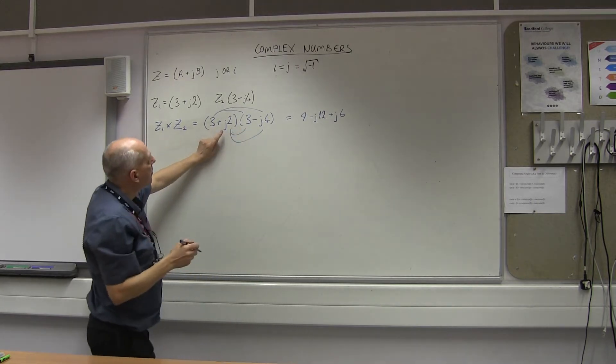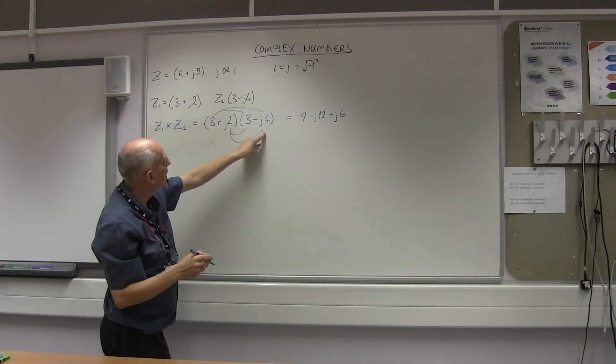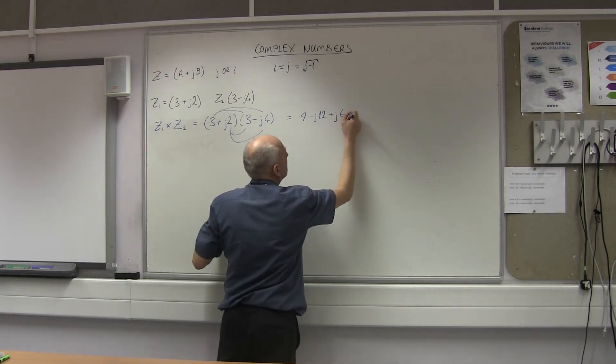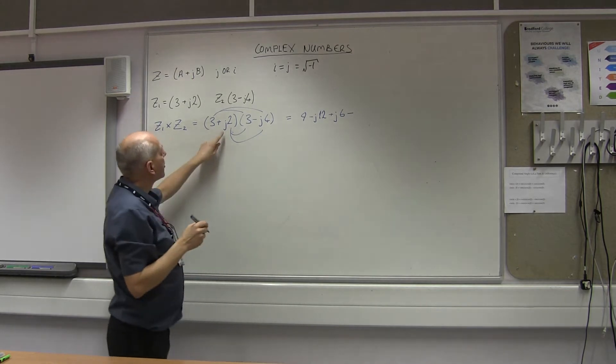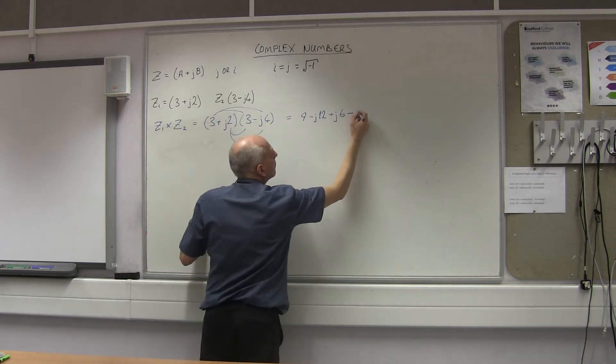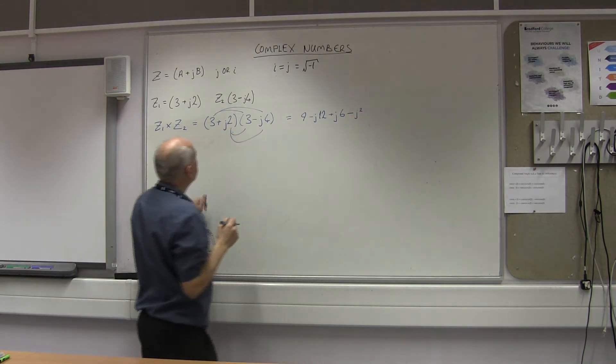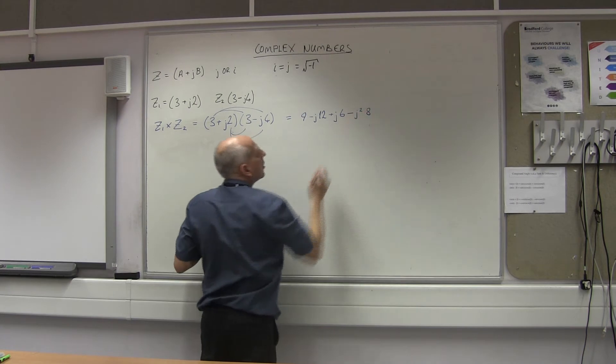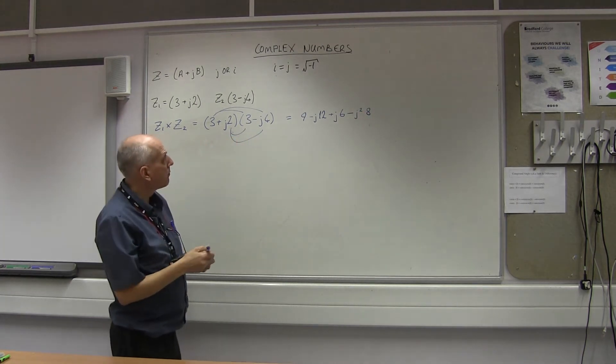And then finally, the more trickier one, J2 times minus J4. So it's going to be a minus sign because we've got plus times a minus. And then we've got J times J, J squared. And then we've got 2 times 4 which is 8. So far, no problems there.